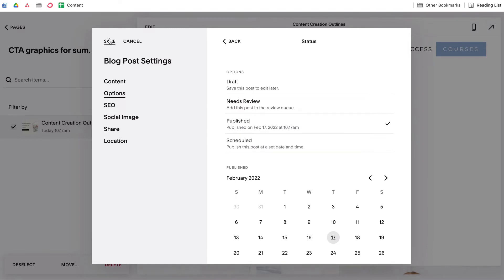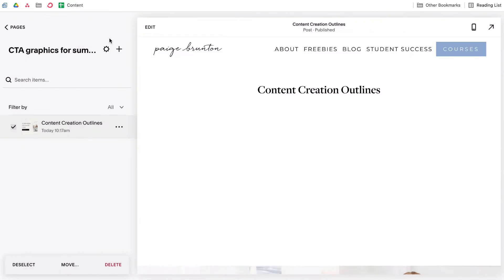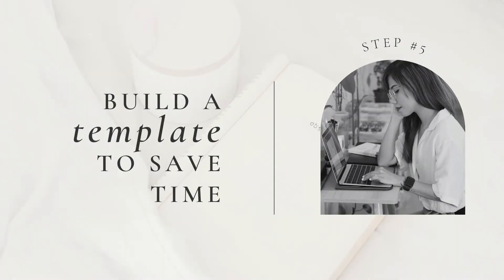You can follow those same steps to set up as many different CTAs as you like, making sure each one has its own post. Then step five is where we start using summary blocks to display our CTA content. Rather than manually adding summary blocks to each new blog post you create, save yourself a bunch of unnecessary steps by building yourself a blog post template. Once it's built, you can then duplicate it each time you sit down to write a new post.